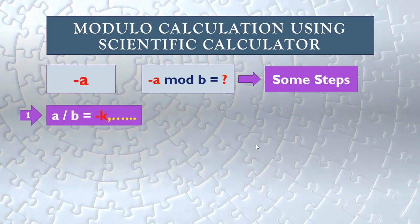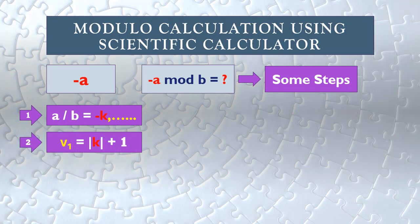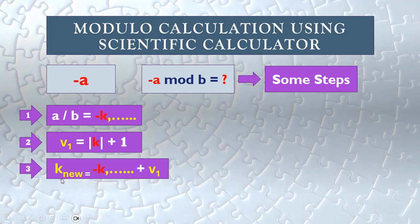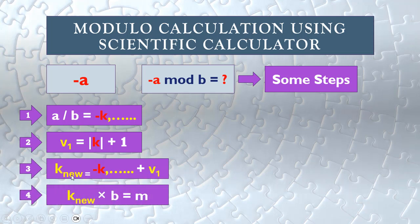For the case of negative a mod b: in the first step, divide a by b. In the second step, take the absolute value of k — the result without its decimal numbers — and add 1. In the third step, the new k equals the first result plus b. Then multiply the new k by b to get the result.